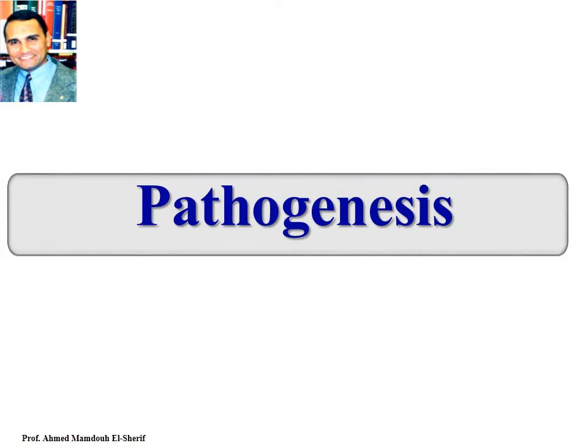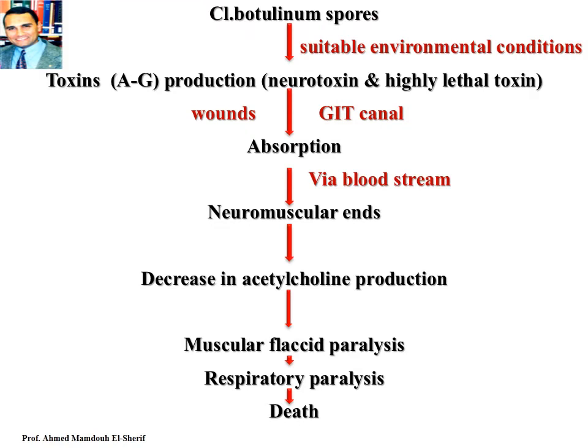Pathogenesis of Botulism: In the presence of suitable environmental conditions, Clostridium spores produce toxins from type A up to G, which have neurotoxic and highly lethal properties. They enter through bones in equines or through the gastrointestinal canal in ruminants, are absorbed and reach neuromuscular junctions via the bloodstream. This results in decreased acetylcholine production, leading to muscular flaccid paralysis, then respiratory paralysis, and death due to suffocation.